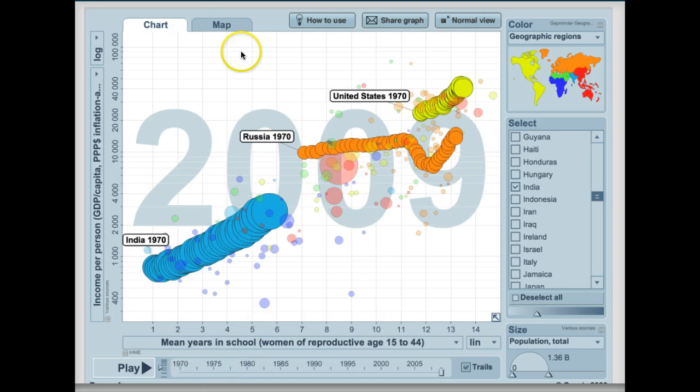And we see that Russia takes a dip in the 1990s, right here. And that's because it was changing governments from a communist dictatorship into a multi-party democracy. And once they adjusted to the new format of government, they quickly increase their income right back to a little higher than where they started.